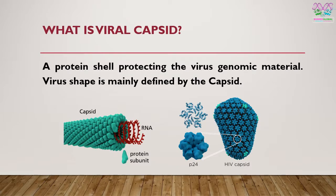The most important genetic-material-protecting component of a virus is the viral capsid, which is made up of a protein shell. Virus shape is also defined by the capsid. Here is the shape of one virus — you can see the capsid over here. And there is another virus, which is an HIV virus, and its capsid differs from the first one, though this one is just a drawing of the capsid structure.